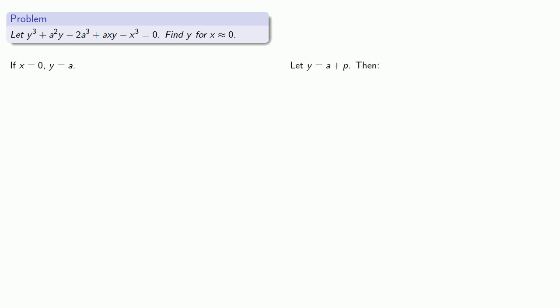So let y equals a plus p. Then, substituting this in to y cubed, a squared y, axy minus 2a cubed, and minus x cubed gives us an equation. Now, all of these on the left-hand side together equals 0, and all the stuff on the right-hand side, which gives us an equation that a and p and x have to satisfy.